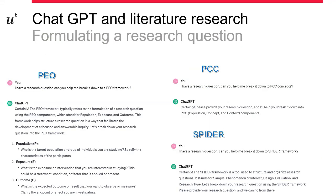Regarding formulating research questions, if you already have a question but you are struggling with breaking it down into concepts, ChatGPT does this pretty well. Regarding the traditional PICO framework — that's Patient, Intervention, Comparison, or Outcome — there are also other iterations: PEO, that's Population, Exposure, Outcome; PCC for qualitative research, which stands for Population, Concepts, and Context; and also SPDR, which is a framework for mixed methods or qualitative research. ChatGPT performs pretty well with many of these frameworks for breaking down into concepts.